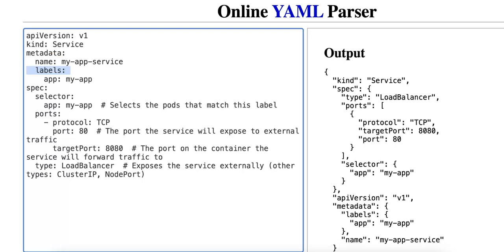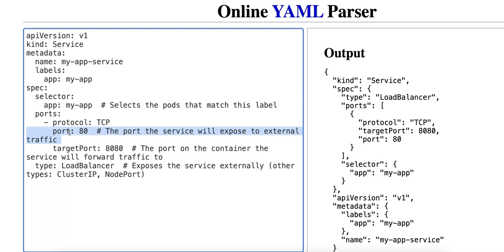In the spec section, the selector field defines which pods the service should forward traffic to using labels — any pod with the label app: my-app will be targeted by this service. The ports section defines the network ports: protocol specifies TCP or UDP (TCP by default), port is the port on which the service is exposed externally (here port 80, the standard HTTP port), and targetPort is the port on the container where traffic is routed — here port 8080 inside the container, which matches the container's exposed port in the deployment.